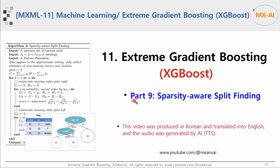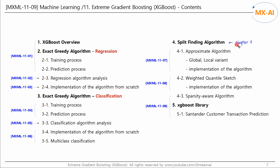This is the last part of a series on XGBoost. In this video, we'll take a look at the sparsity-aware split-finding algorithm. This video was produced in Korean and translated into English, with AI text-to-speech. Chapter 3 of the XGBoost paper introduces split-finding algorithms: the approximate algorithm, weighted quantile sketch algorithm, and sparsity-aware algorithm. We've looked at the first two in previous videos, and in this video we'll look at the sparsity-aware algorithm. We will then use the XGBoost library to analyze Santander Bank's customer dataset.